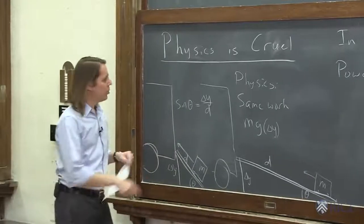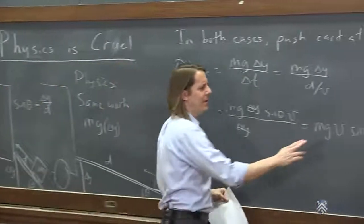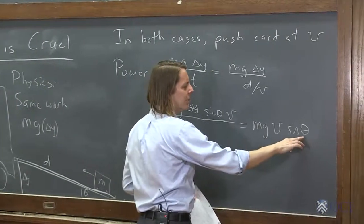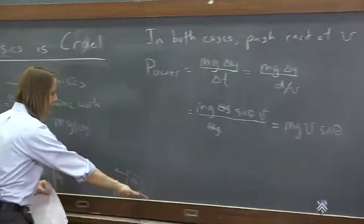So what you find is the work is the same for the two angles of the ramp, but the power is different. When the angle is really small, sine theta is small. Small angle, very low power.